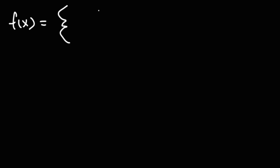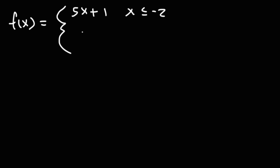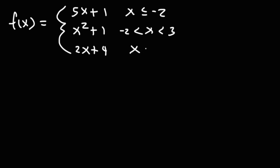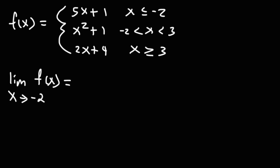Now let's consider an example with piecewise functions. Let's say we have f of x equal to 5x plus 1 when x is less than or equal to negative 2, and equal to x squared plus 1 when x is between negative 2 and 3, and equal to 2x plus 4 when x is greater than or equal to 3. So let's say we want to evaluate the limit as x approaches negative 2 of this piecewise function. Does the limit exist?